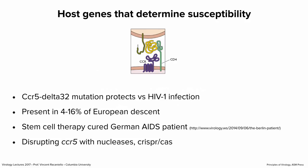The CCR5-Delta-32 mutation is a deletion in the gene encoding the co-receptor CCR5, present in 4-16% of people of European descent. These individuals are resistant to infection because it's CCR5-binding viruses that are transmitted from one person to another. The German AIDS patient famously received a stem cell transplant from a patient with a CCR5-Delta-32 deletion and was cured — however, this hasn't worked for anybody else since then. Nevertheless, people are trying to disrupt CCR5 with various approaches, most recently CRISPR-Cas, as a way to cure people.